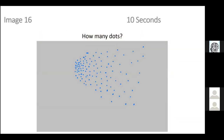Moving on to image 16 — estimate how many dots, 10 seconds. There are 122 dots. I like this dot spread because it looks a lot more like a bird flock flying in front of you — you can see the clumping in front and the more dispersed birds in the back.